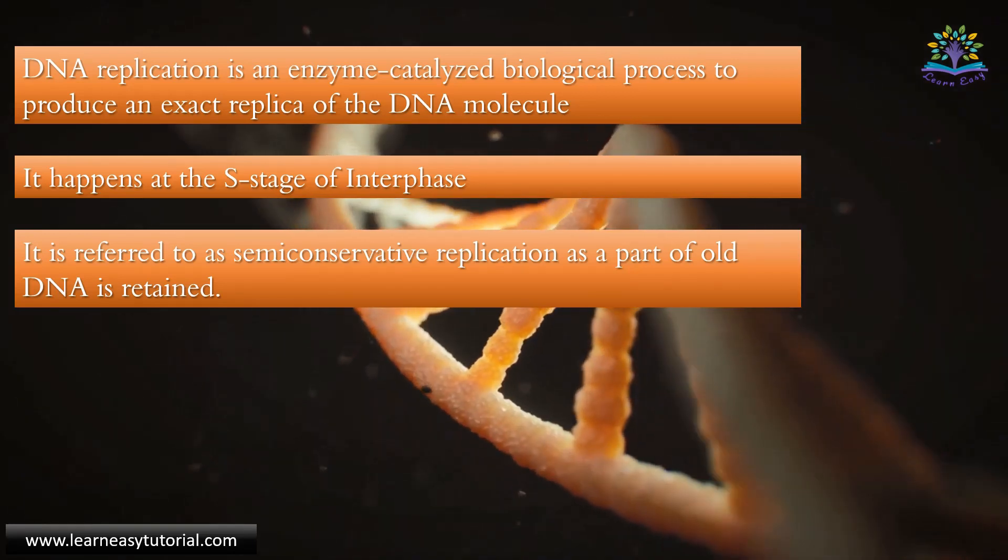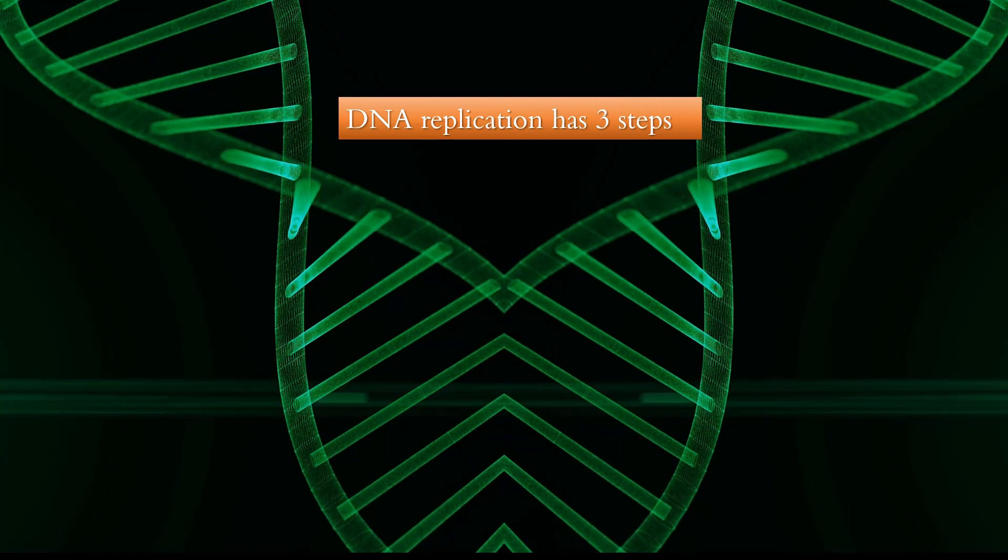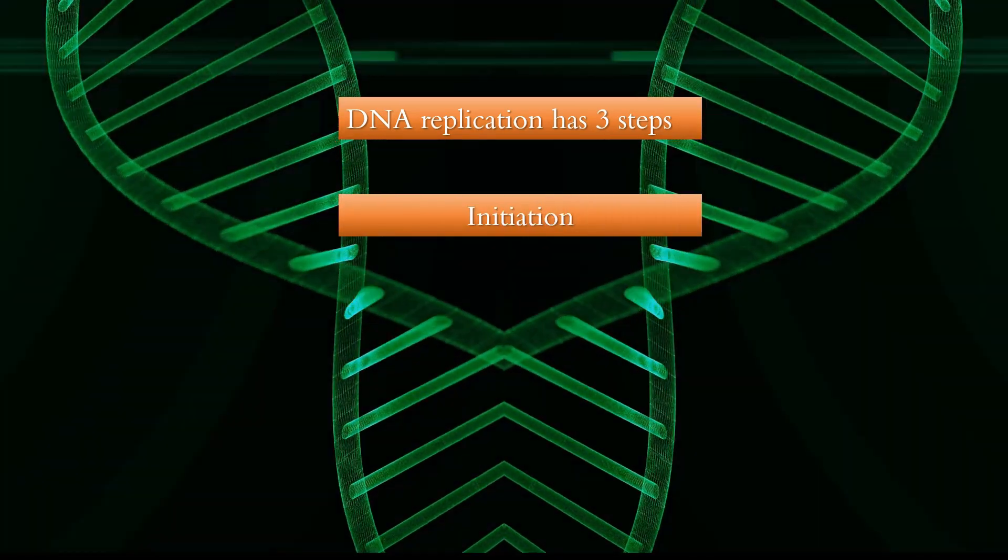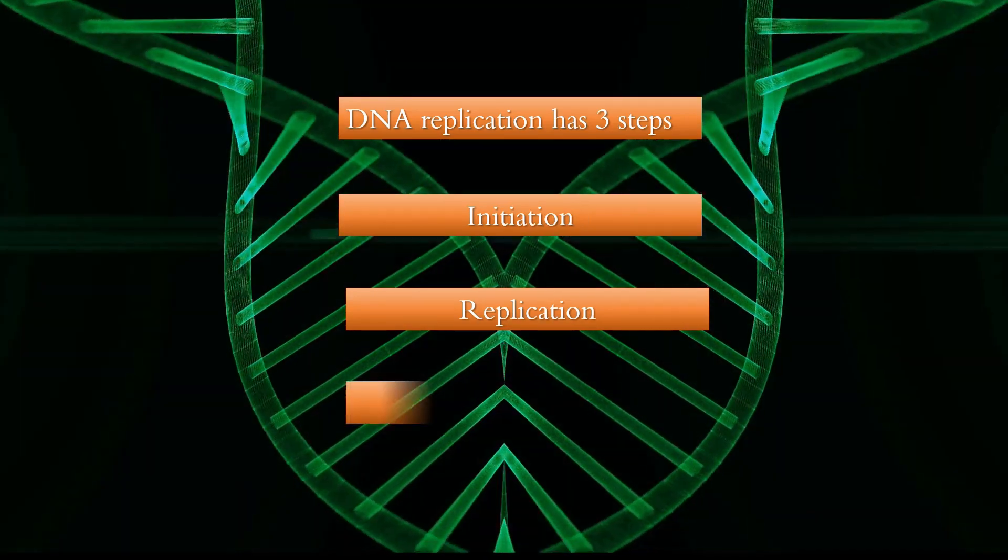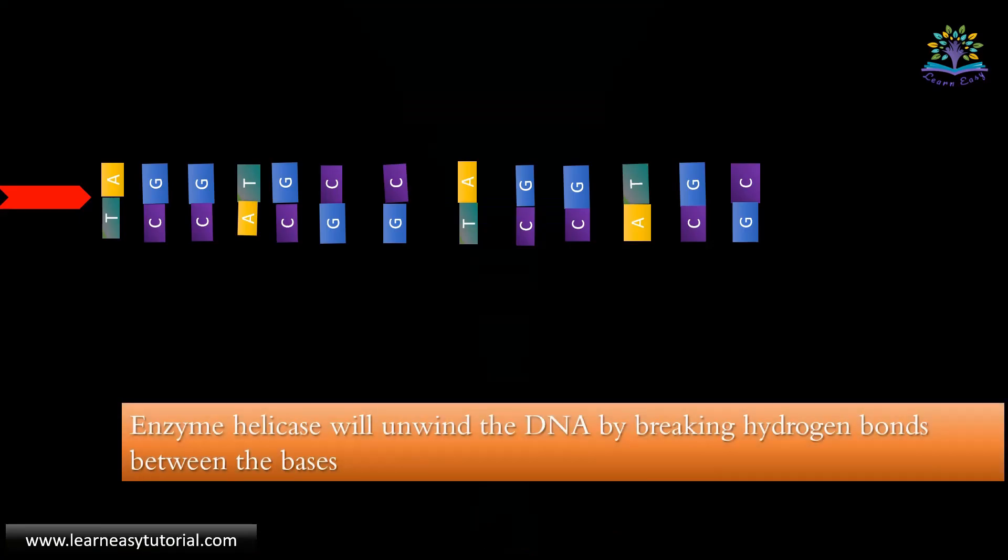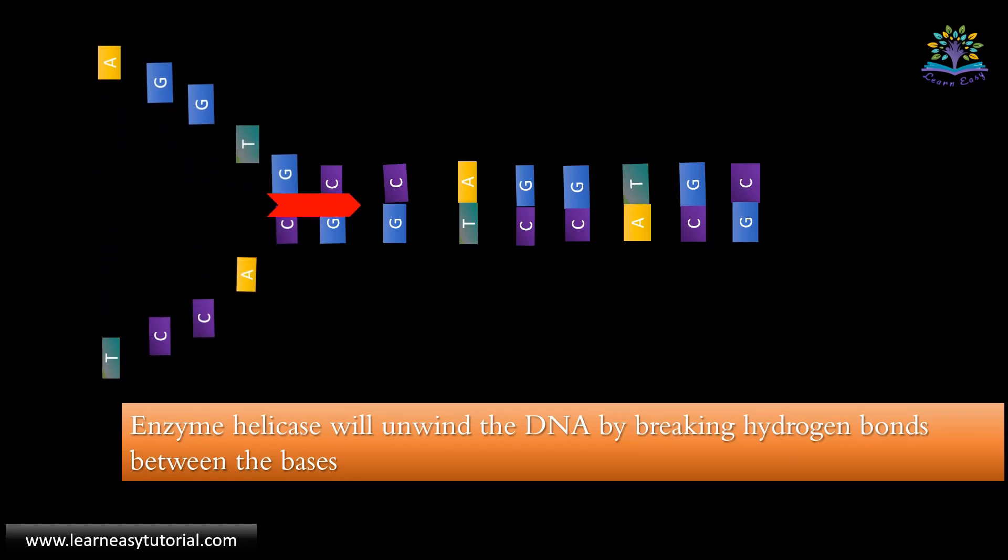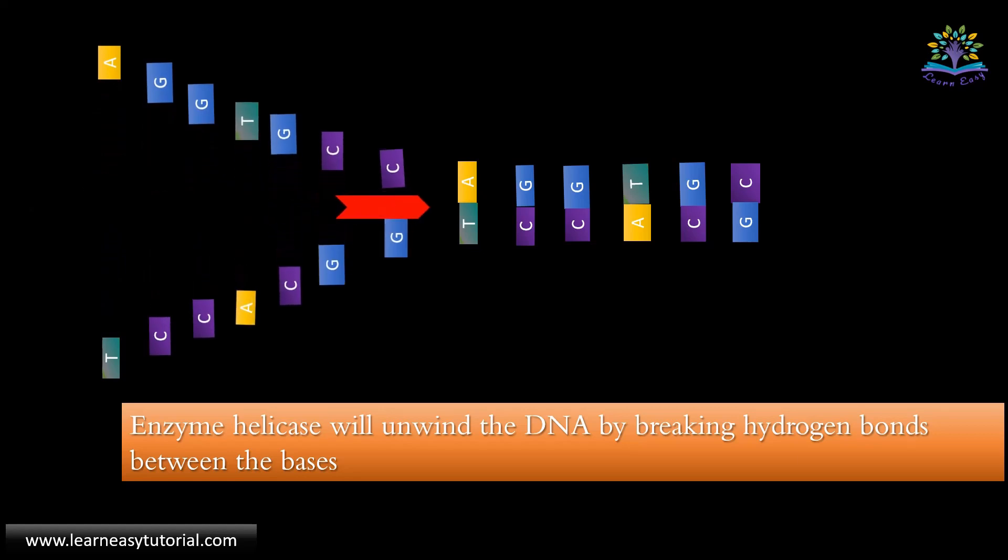DNA replication has three steps: initiation, replication, and termination. Enzyme helicase will unwind the DNA by breaking the hydrogen bonds between the bases. This unwinding process starts at the origin, which is a particular sequence in the DNA where the replication process is initiated.